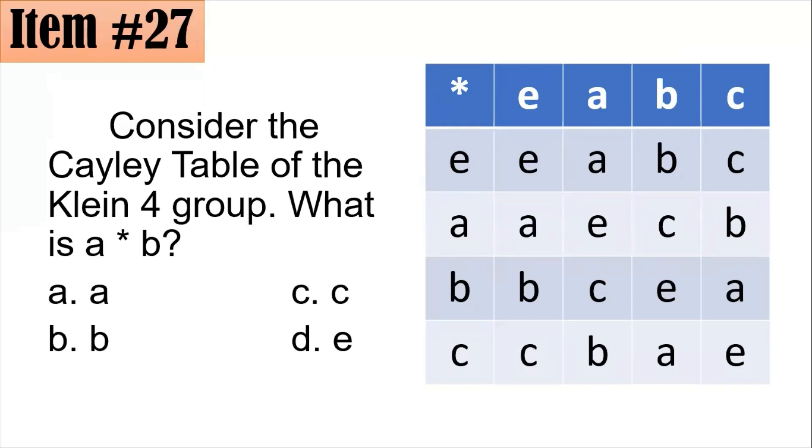Let's consider the Cayley table of the Klein IV group. What is A star B? So as I mentioned earlier, we have here E, A, B, C. We have here also E, A, B, C. And let's denote the operation for the Klein IV as, let's call it asterisk or star. And the Cayley table, by the way, is usually used if ever you have finite sets. And this is a finite set because Klein IV only has four elements: E, A, B, and C.